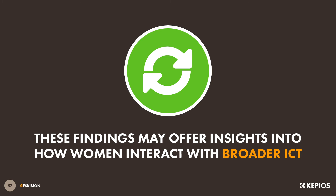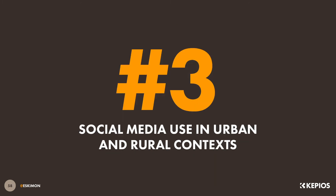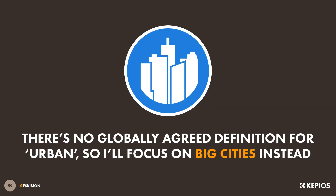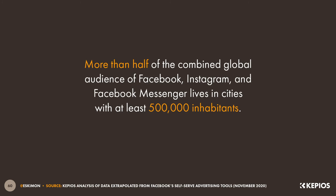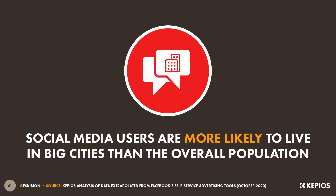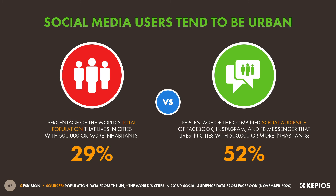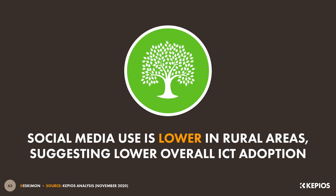So as we've already seen, social media data can offer a wealth of insights into ICT use by age and by gender. But what about insights into ICT adoption in urban versus rural areas? Now it's important to note that there's no globally agreed definition for what constitutes an urban setting, so instead I'll be comparing social media activity in larger cities to activity outside of those conurbations. The data suggest that more than half of the combined global audience of Facebook, Instagram and Facebook Messenger lives in cities with at least half a million inhabitants. Specifically, 52% of the world's social media users live in cities with at least half a million inhabitants, but just 29% of the world's total population lives in those same locations, clearly indicating that rural communities are significantly less likely to have adopted internet-connected technologies.